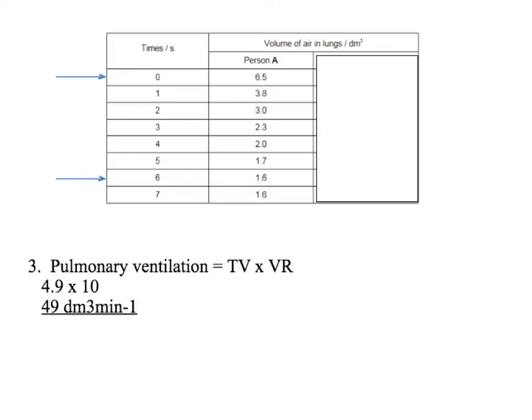So now let's work out the pulmonary ventilation. We've got the tidal volume, which is 4.9. We've got the ventilation rate, which was ten breaths per minute. So our pulmonary ventilation — we times them together — is 49 decimetres cubed per minute.